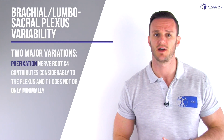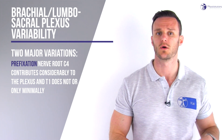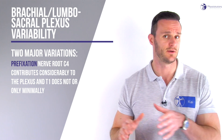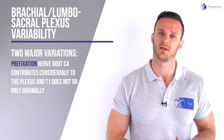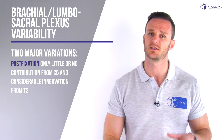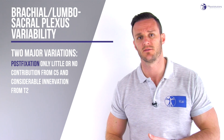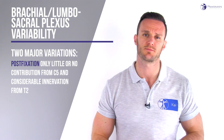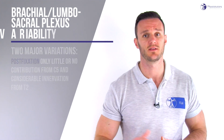If we look at cadaver studies for the brachial plexus, a typical textbook anatomy of the brachial plexus was only found in 37 to 77 percent of cases. Two major variations are described in the brachial plexus. We are talking of prefixation, where nerve root C4 contributes considerably to the plexus and T1 does not or only minimally — this variation has a prevalence of between 26 to 48 percent. The second variation is called postfixation, where there is only little or no contribution from C5 and considerable innervation from T2, present in 4 percent of the population.